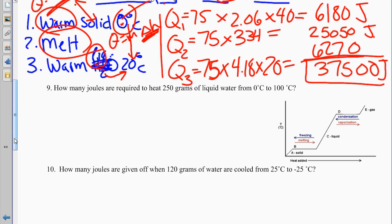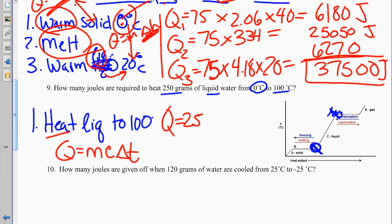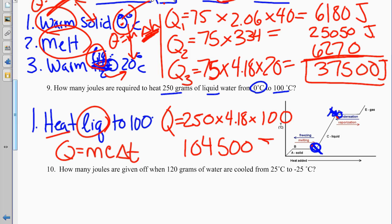Problem 9: how many joules are required to heat 250 grams of liquid water from 0 to 100 degrees? This is just one Q — heating the liquid. Q equals MC delta T: 250 times 4.18 times 100 equals 104,500 joules.